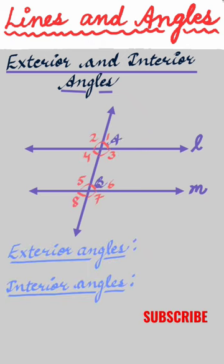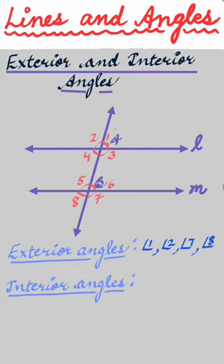These eight angles are numbered one, two, three, four, five, six, seven, eight. Exterior angles are those on the outside — these are one, two, seven, and eight. Interior angles are those on the inside — these are three, four, five, and six.